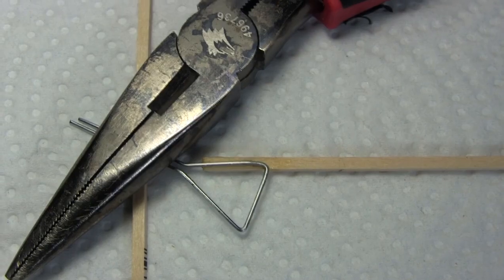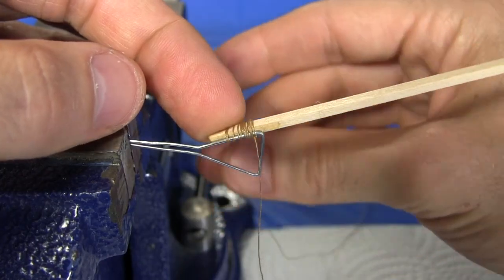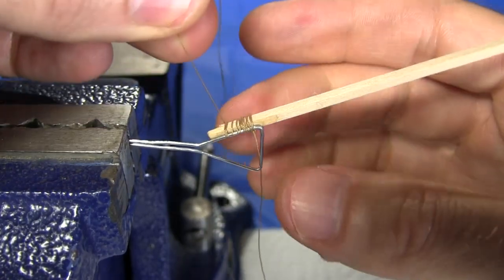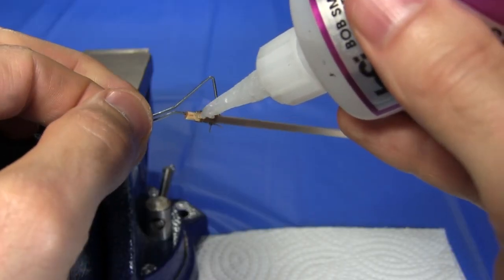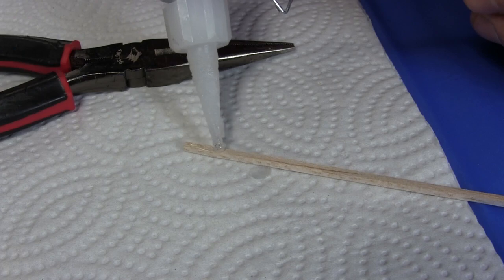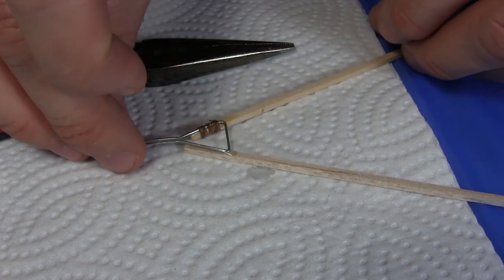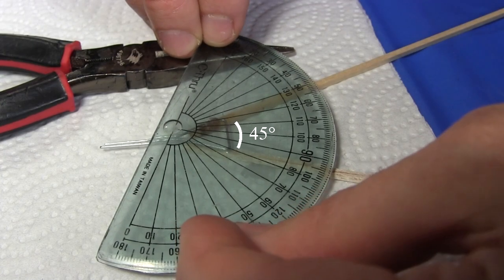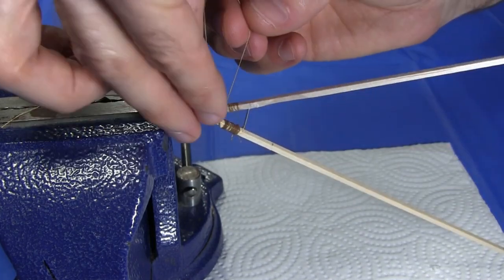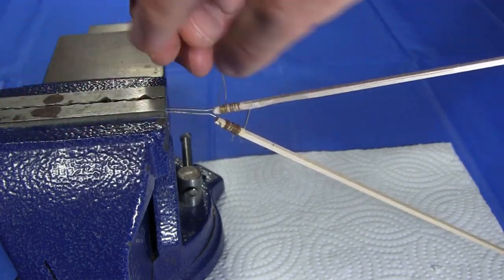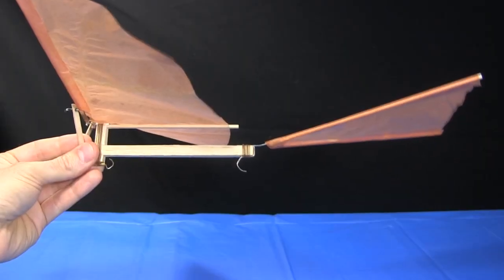I glue on one side, and wait for it to dry. At this point it's not held on very well, so I carefully tie and glue on some thread, like I did with the fuselage. Only after that's dry do I glue on the other piece, making sure that the angle is 45 degrees. When that's dry, I very carefully reinforce that one with thread too.